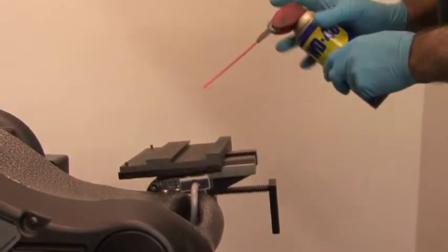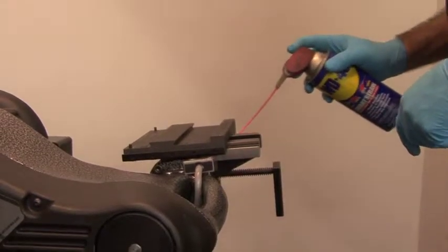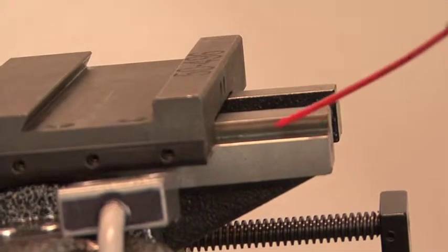You can use a little spray lube on the rails. Do not use grease or similar thick lubes. This would attract chips and debris.